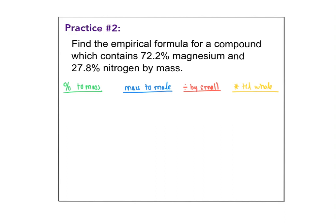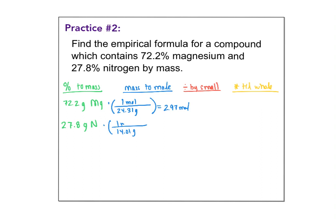Here's another one. Find the empirical formula for a chemical which has 72.2% magnesium and 27.8% nitrogen. First step, percent to mass: 72.2 grams of magnesium and 27.8 grams of nitrogen. Then mass to mole using molar masses: 24.31 grams per mole for magnesium gives 2.97 moles, and 14.01 grams per mole for nitrogen gives 1.98 moles. Divide by small — 1.98 is the smallest. Dividing 2.97 by 1.98 gives about 1.5.